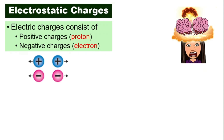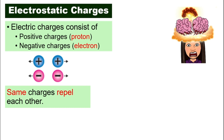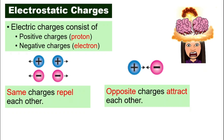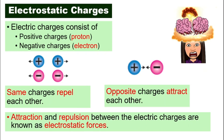When two same kinds of charges come together, they don't like it — they will push each other away. So same charges repel each other; repel means push away. But when a proton meets an electron, they are different, so they attract each other — they move towards each other. The attraction and repulsion between electric charges are known as electrostatic forces.